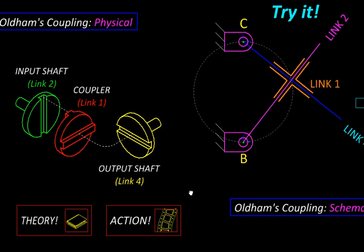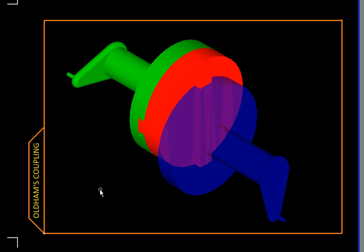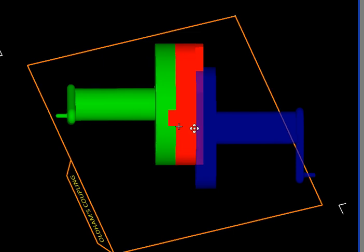Let us use this action link here to see this in 3D and watch the animation. So this is how Oldham's coupling looks. This is one shaft, this is the other shaft, and engaging with both of them is this intermediate disc, our link number one. If you see in this view, you can notice that the two shafts are not collinear but they are parallel.